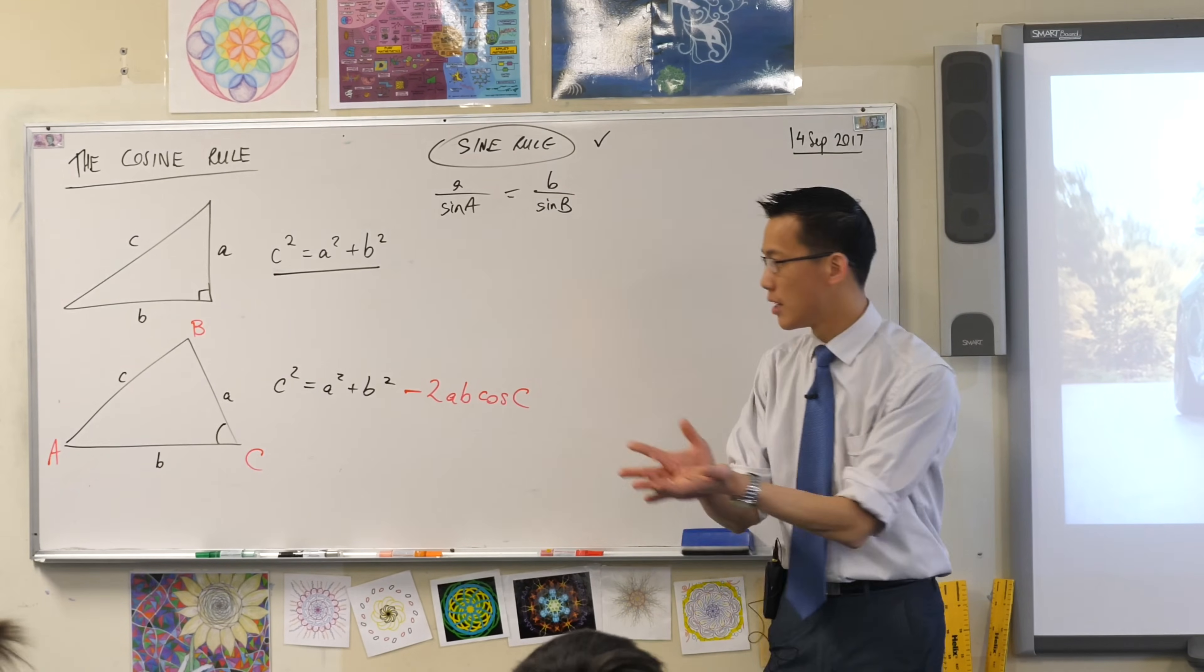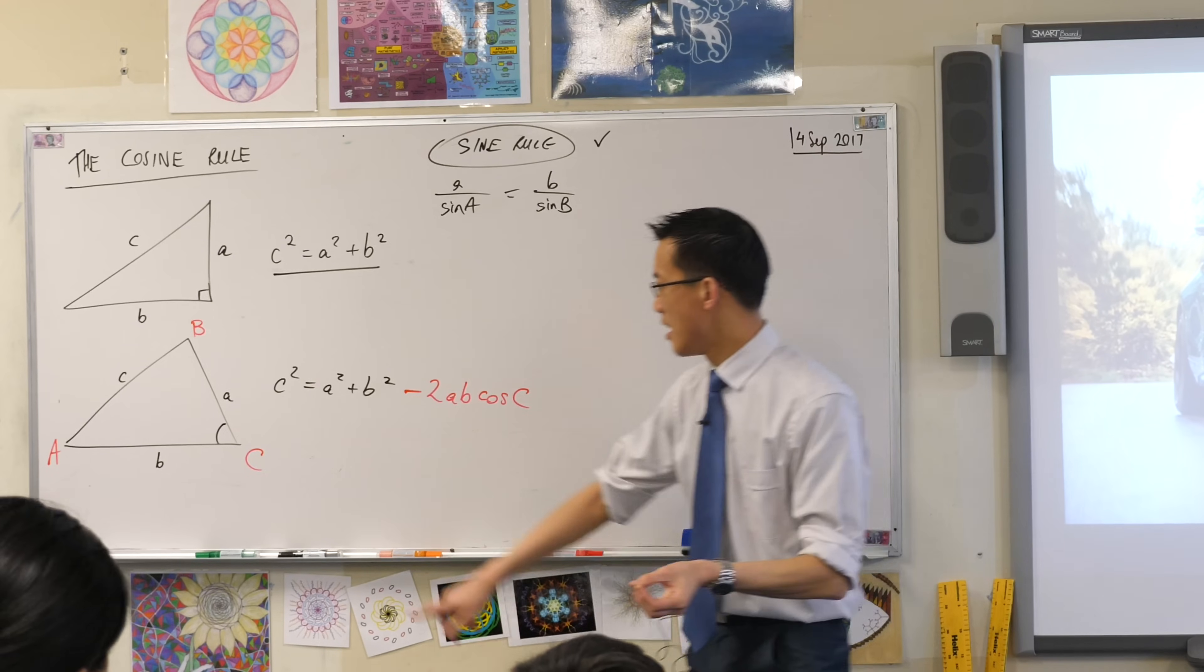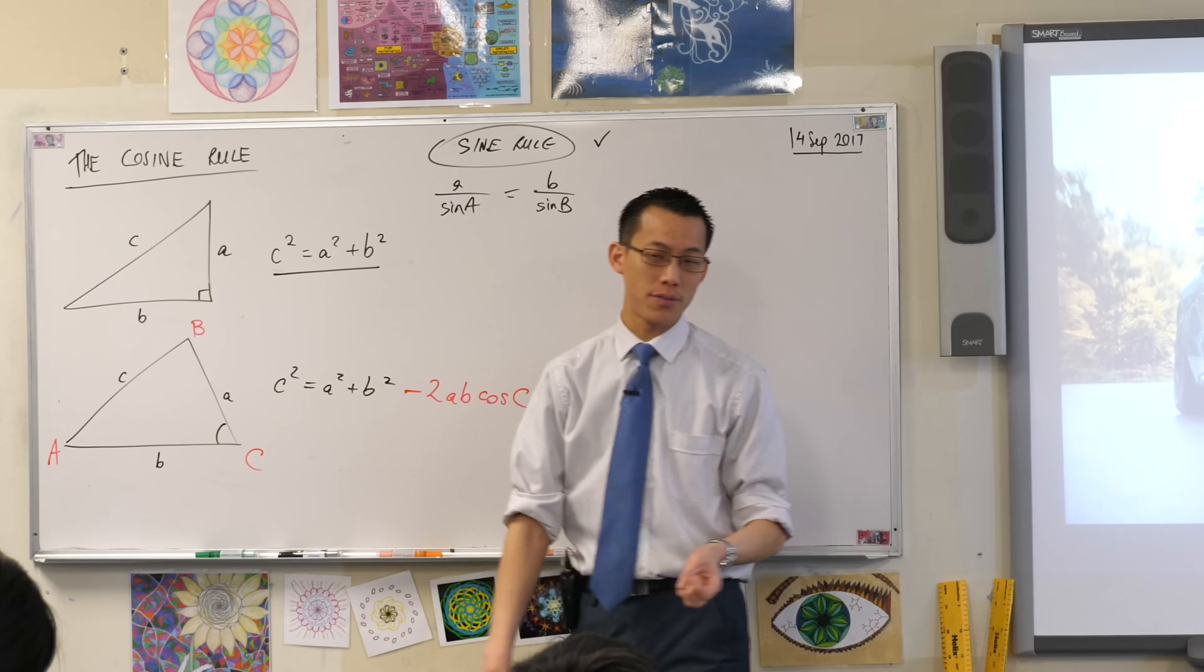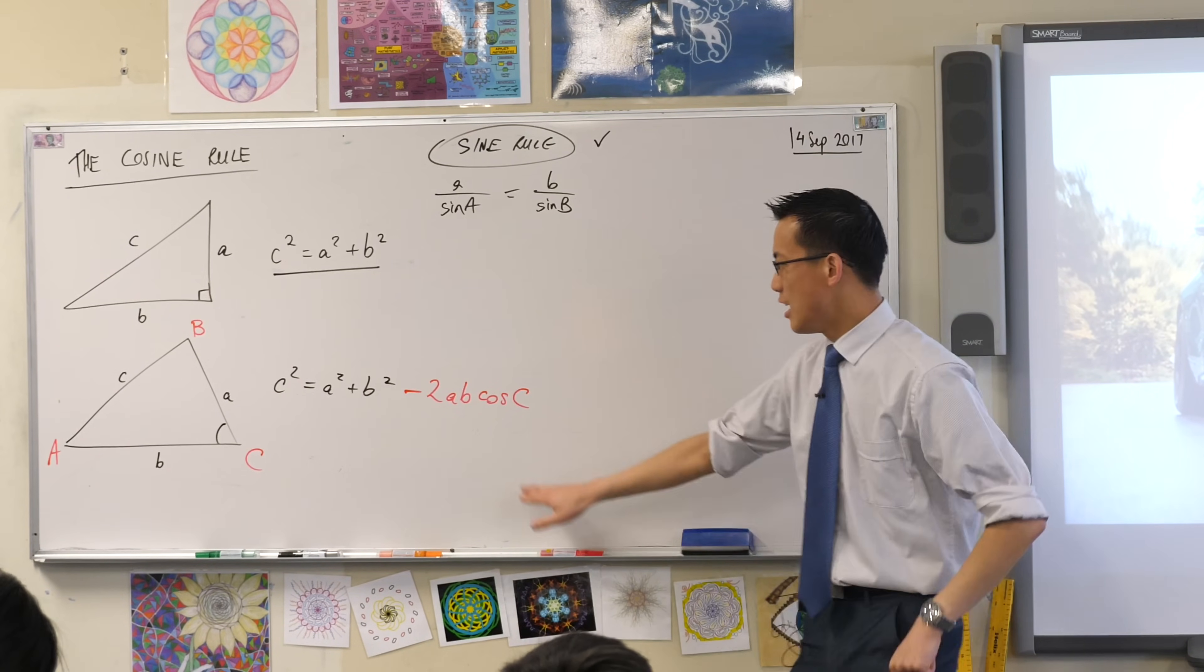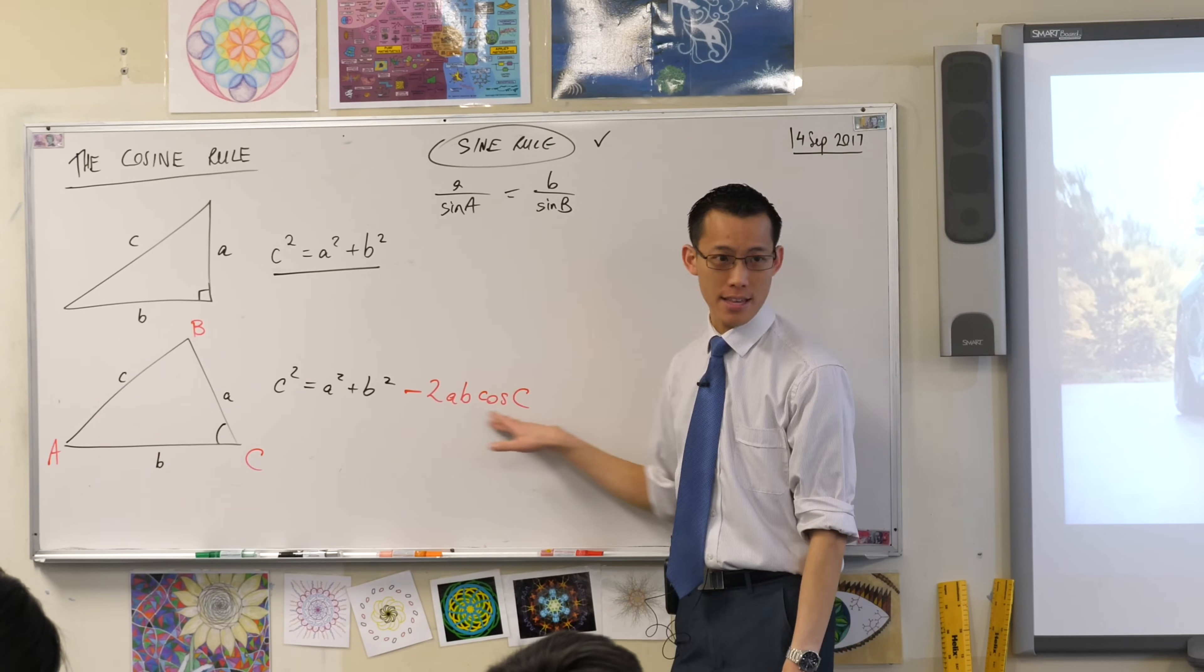But, Pythagoras' theorem, as it is, doesn't work for non-right-angled triangles. If you don't have a right angle in there, if you've got some other guy like 30, 45, 81, whatever angle you like, to compensate for the fact that it's not right-angled, you subtract this thing here.